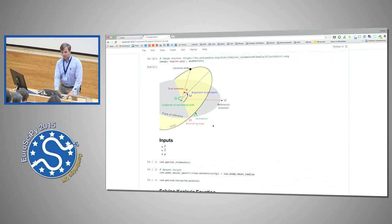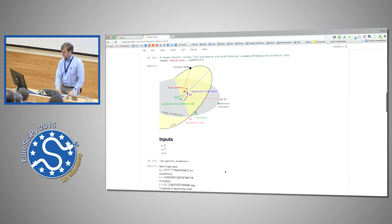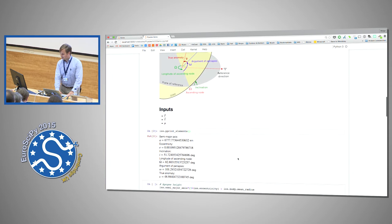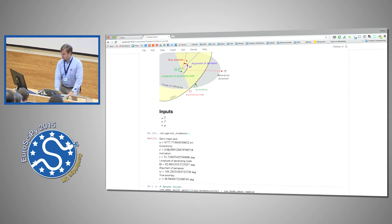What do we need as inputs? We need the position vector and the velocity vector and the gravitational parameter. And nice we have all of that. So we can directly calculate it and print it. So we see the eccentricity is close to zero which means the orbit is almost circular. And the inclination is below 180 degrees. That means it's a prograde orbit. So the sense of rotational direction is the same as the orbit of the Earth.